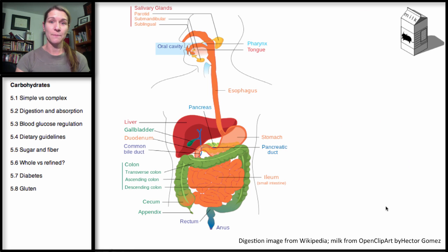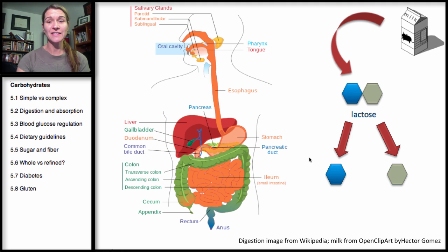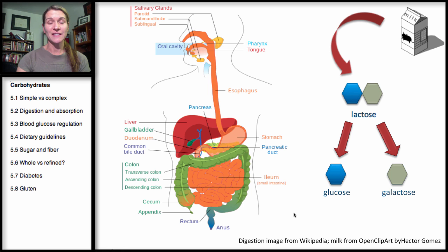Now let's take a look at milk. The main carbohydrate in milk is lactose. We have the disaccharide lactose, which is made of glucose and galactose. When these enter the intestines, lactose is broken down into the monosaccharides glucose and galactose — the individual sugar units. So all of these carbohydrates have been broken down into their individual monosaccharides within the intestines.